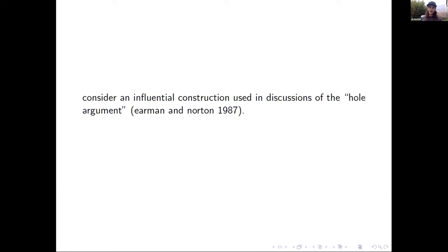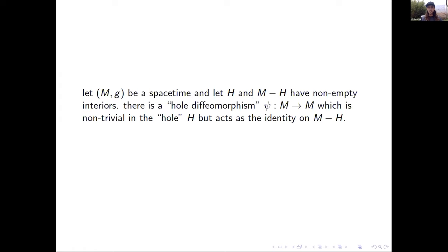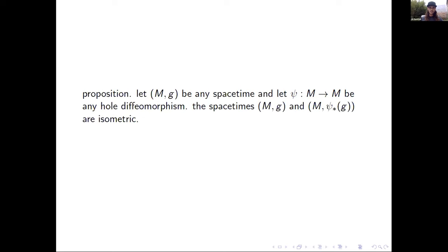Let's consider a very influential construction used in discussions of the hole argument. Let (M, g) be a spacetime and let H and its complement have non-empty interiors. There is a hole diffeomorphism from M to M which is non-trivial in the hole but acts as the identity outside of the hole. A trivial proposition: let (M, g) be any spacetime and let ψ be any hole diffeomorphism. Then the spacetime (M, g) and the spacetime (M, ψ*g) are isometric, and the isometry is realized by ψ.